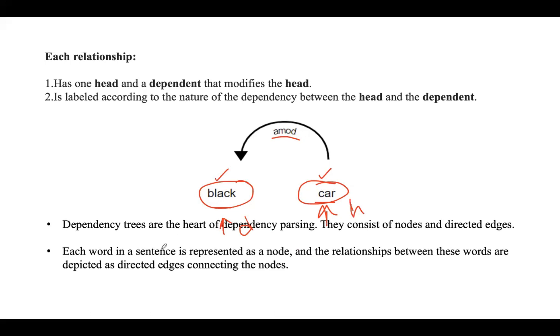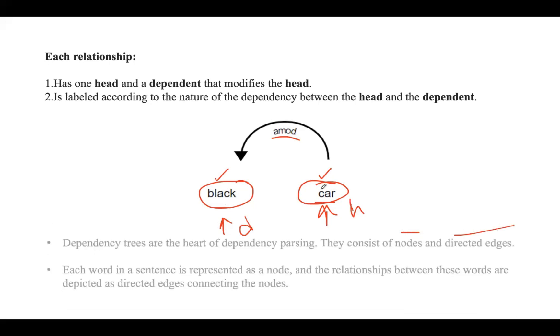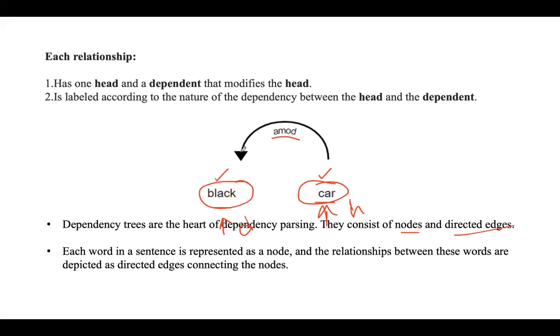Dependency trees are considered part of dependency parsing, and they mainly consist of nodes as well as directed edges. Here you can see 'black' and 'car' are nodes, and there is a directed edge from 'car' to 'black'. Each word in a sentence is represented as a node, and the relationship between these nodes or words is depicted by the directed edge. These directed edges mainly indicate which word governs or modifies another word, giving us a clear hierarchy within the sentence.